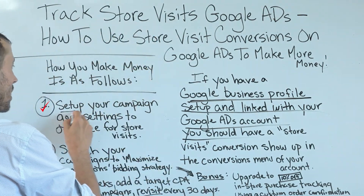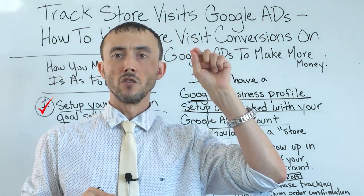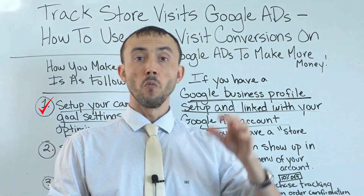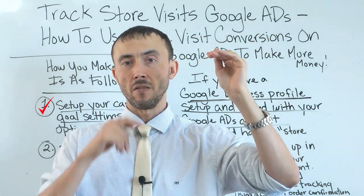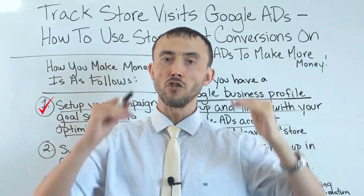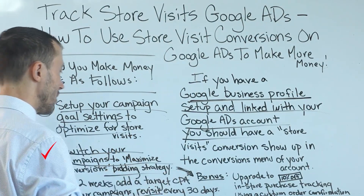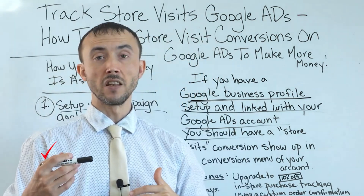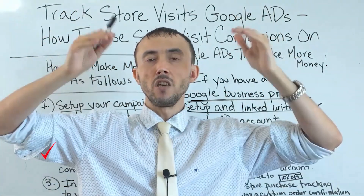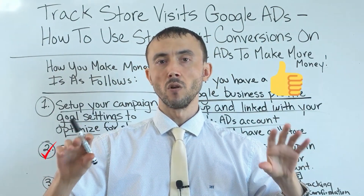Here's how you make more money with the store visits conversion. Number one: set up your campaign goal settings to optimize for store visits. Under your campaigns, go to the settings menu, find the goal settings option, and tell Google which goals you want to optimize for — in this case, store visits. Then switch your campaigns to a maximize conversions bidding strategy so the campaign bids more or less on a keyword-by-keyword basis based on what's getting you the most store visits.